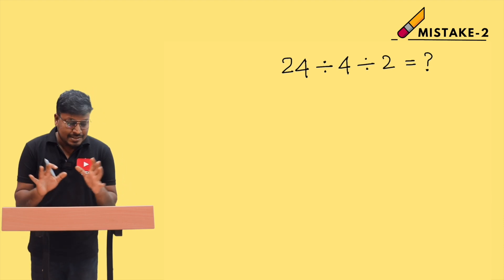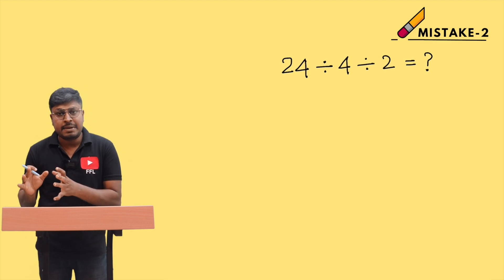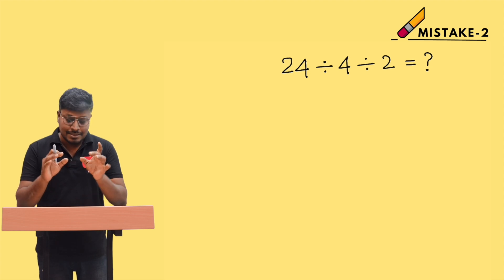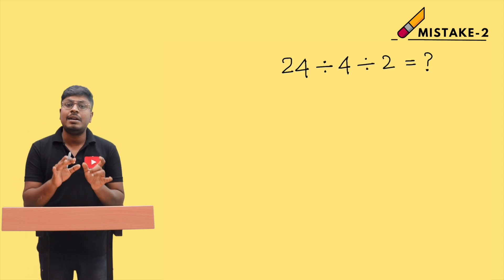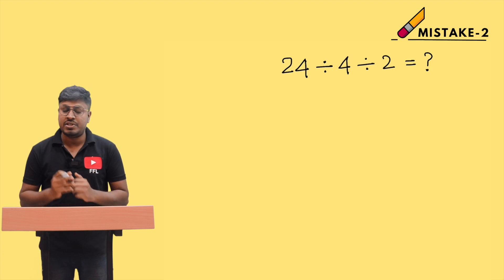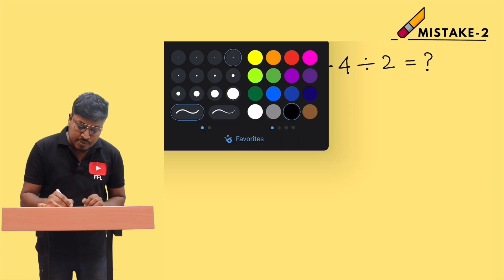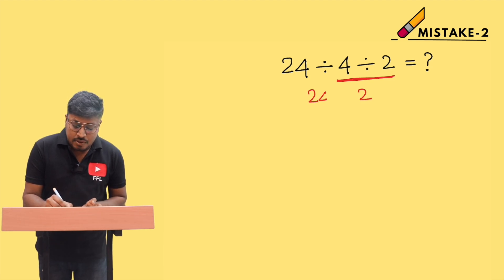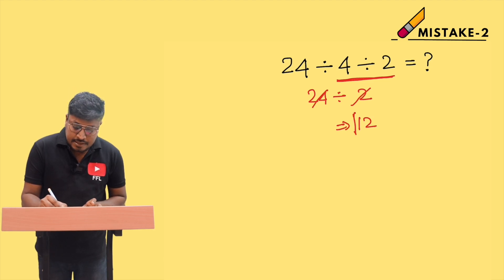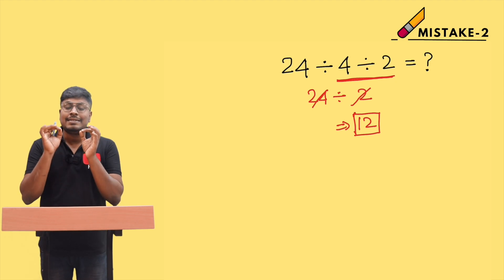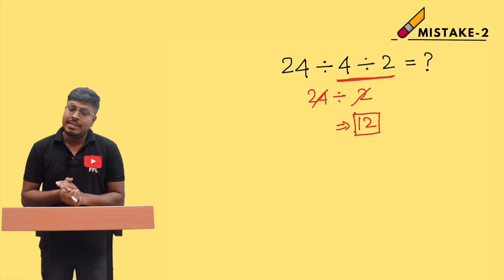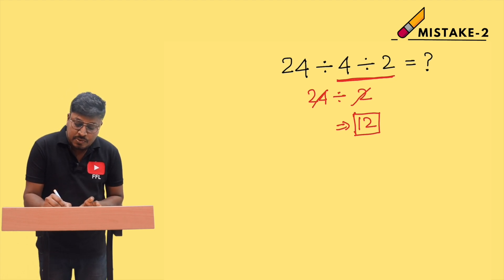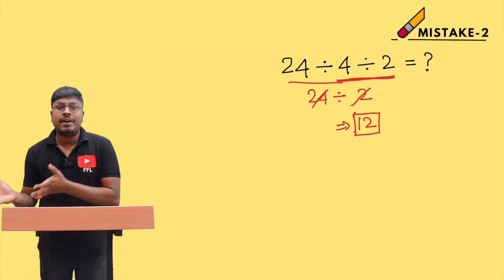There are two methods to solve this, and both give the same answer. But many students use the wrong method. What I've seen most students do is divide the last two numbers first — 4 ÷ 2 = 2 — and then divide 24 ÷ 2 to get 12. This is completely wrong. You should not solve it this way.